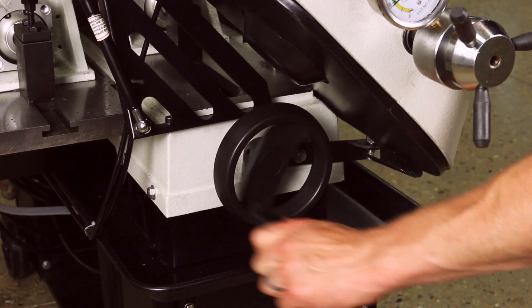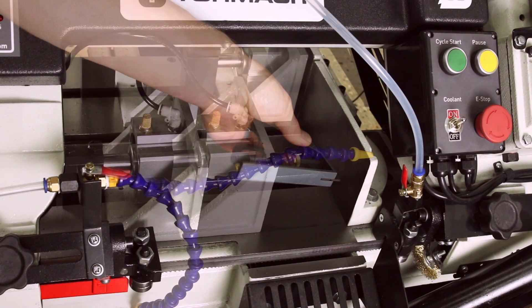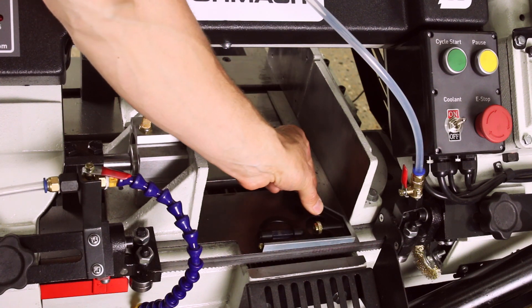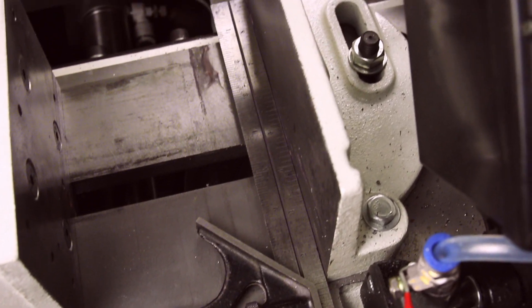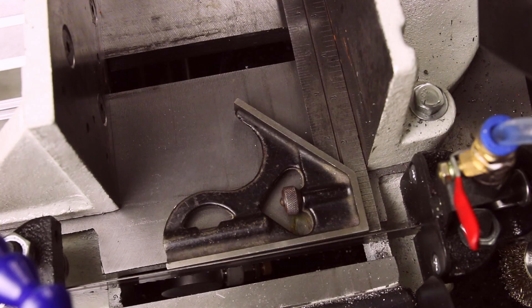Open the fixed jaw by turning the handle counterclockwise until you have sufficient clearance for your square. Place the square on the base casting. If it is not square with the blade, then loosen the two fixed jaw bolts and align it with the square and retighten.